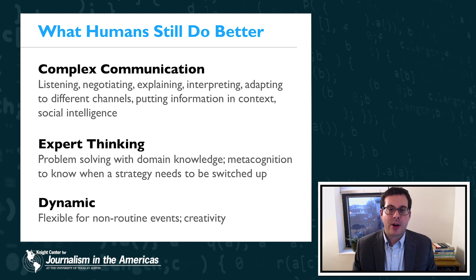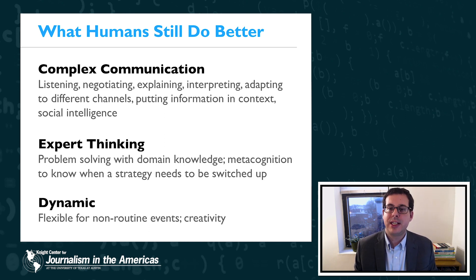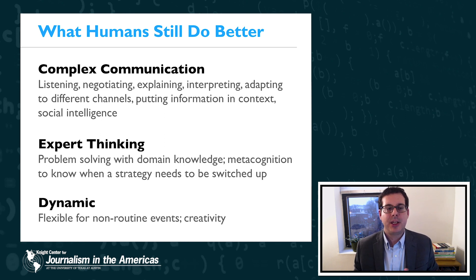Expert thinking is another area where humans still excel with respect to algorithms. Expert thinking is about in-depth problem solving using domain knowledge. In investigative journalism, an investigation might include analyzing documents, data, and other sources of information for relationships and associations that might not even be known ahead of time, where the significance of those relationships might only become clear through the interpretation of an expert with very deep domain knowledge in an area like finance. Expert thinking also relates to metacognition — knowing when to step back and when a particular strategy might need to be switched up. Algorithms don't have that ability, but people really excel at it.